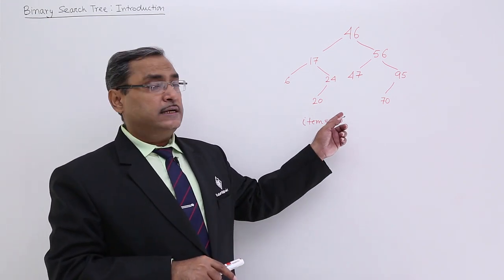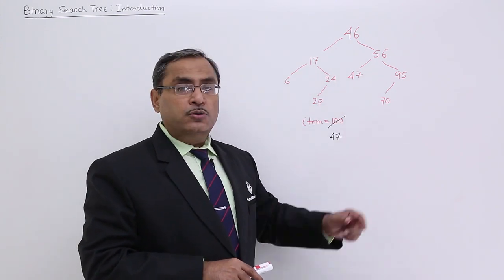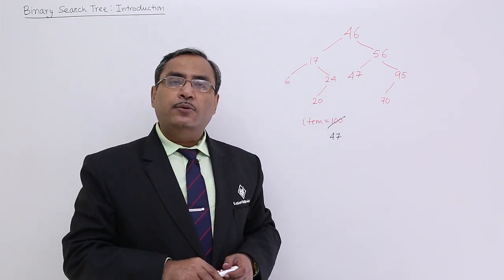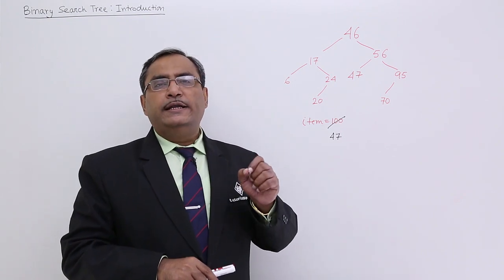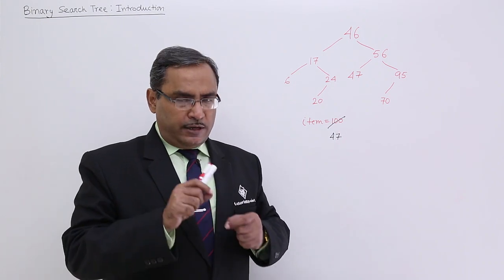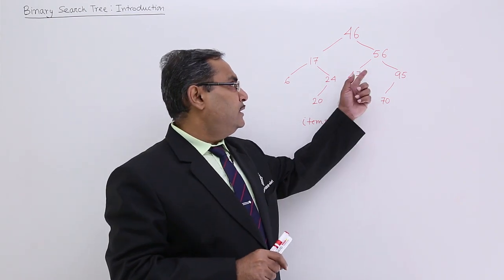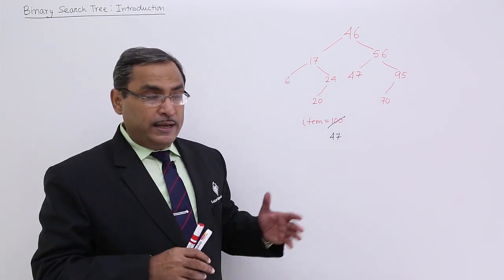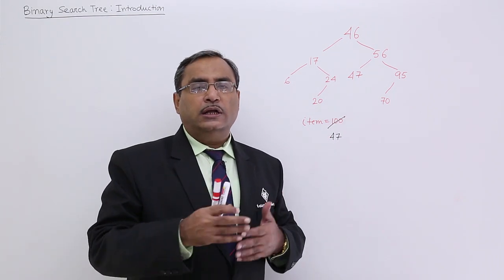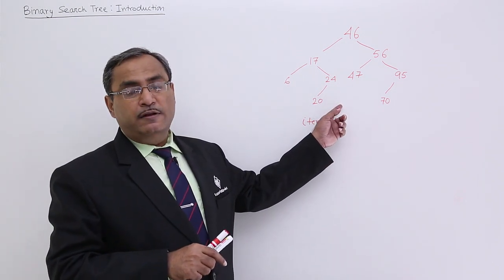So this binary search tree is used for searching. Why are values not allowed to repeat? Because these values are key values — for example, employee ID is a key. Key values cannot be repeated because using the key, the respective record has to be uniquely identified. Using this binary search tree, we can perform searching on records by key values very easily. That is why the binary search tree is mainly for searching.